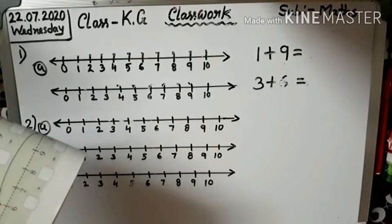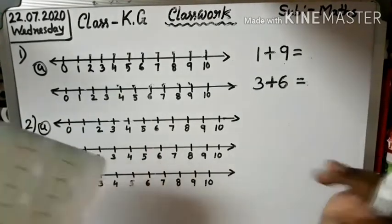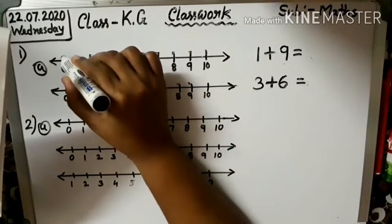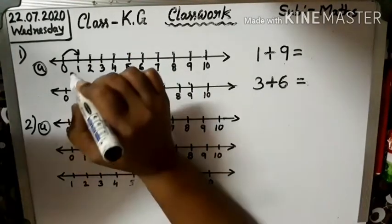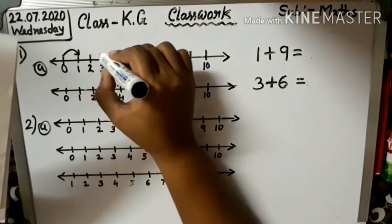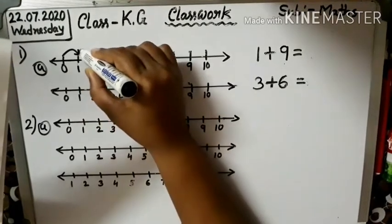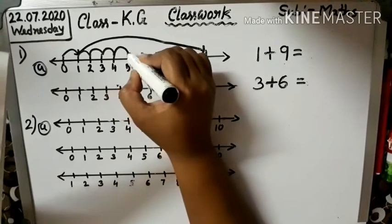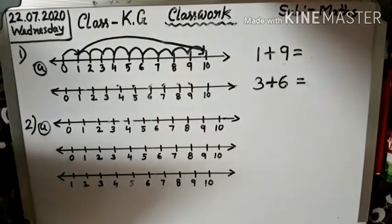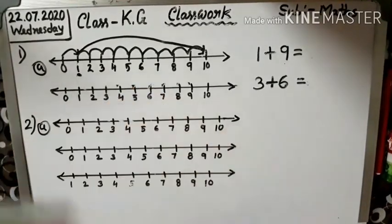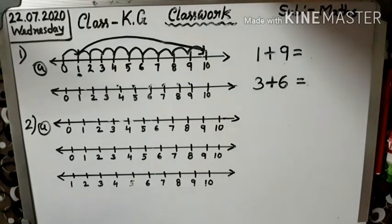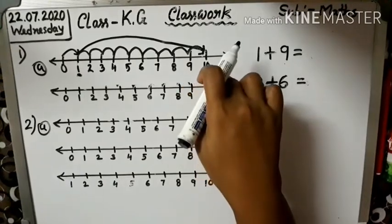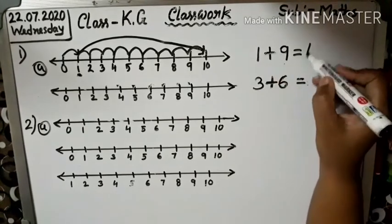1 plus 9. Follow me. Okay, 1 plus 9. First, your finger touches 1. Okay. Then you jump number 9: 1, 2, 3, 4, 5, 6, 7, 8, 9. So we go 9 jumps to reach number 10. So, 1 plus 9 equals number 10.